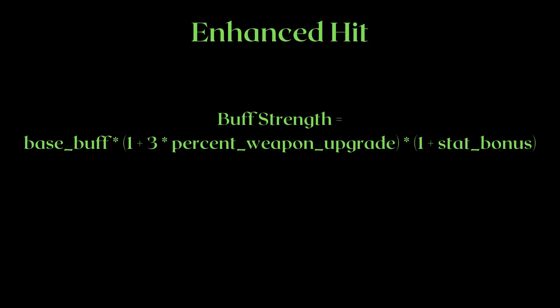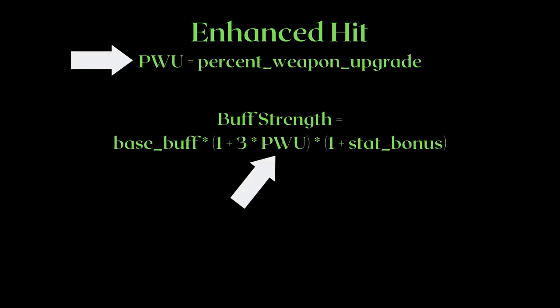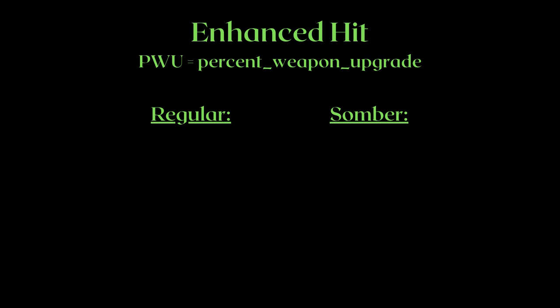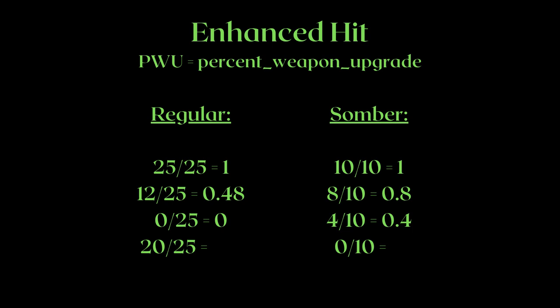Woah, slow down professor — what the heck is this? It's alright, we'll go over the terms one by one. I am going to abbreviate percent weapon upgrade as PWU, as this is a simple term that will come up in the future too. PWU is basically how much your weapon is upgraded to full, expressed in a percentage term. Elden Ring has regular weapons and somber weapons with different max upgrade levels. The higher the upgrade level of your weapon, the more damage you are going to deal with the buff portion of the enhanced hit, because the buff portion's calculation does not depend on the base AR of the weapon.